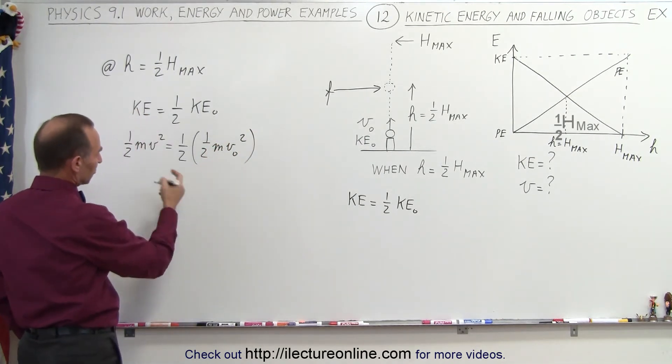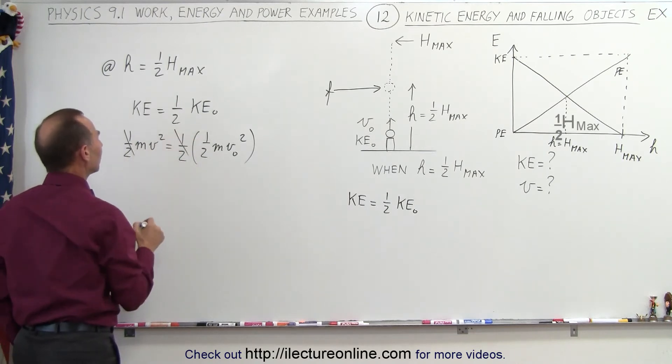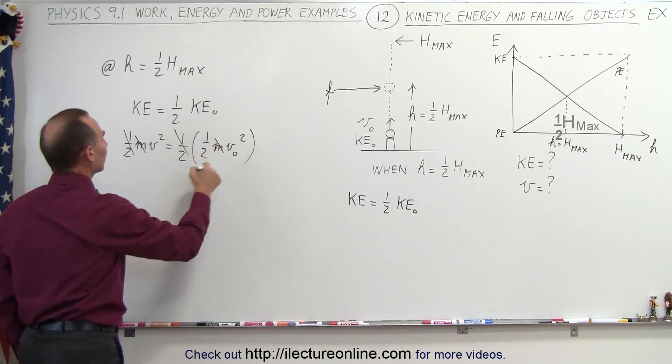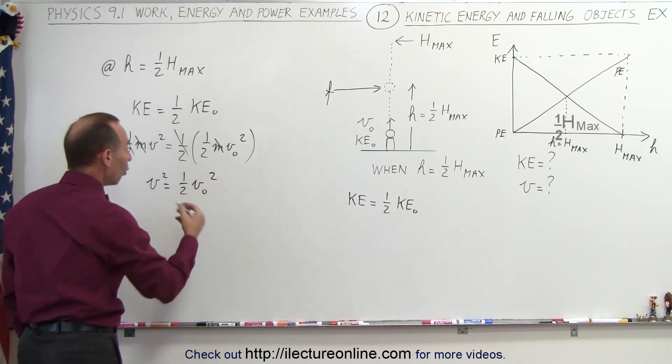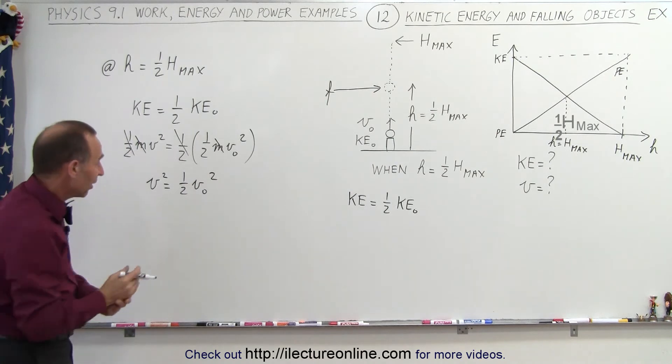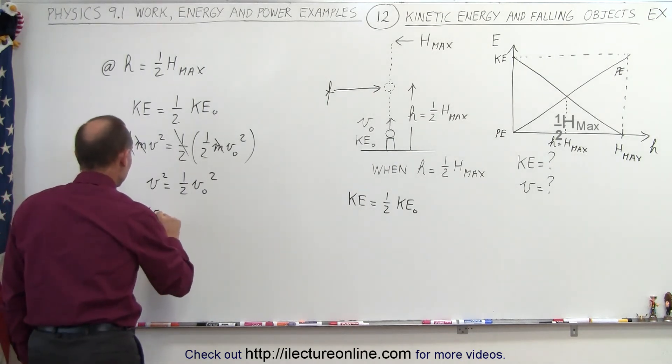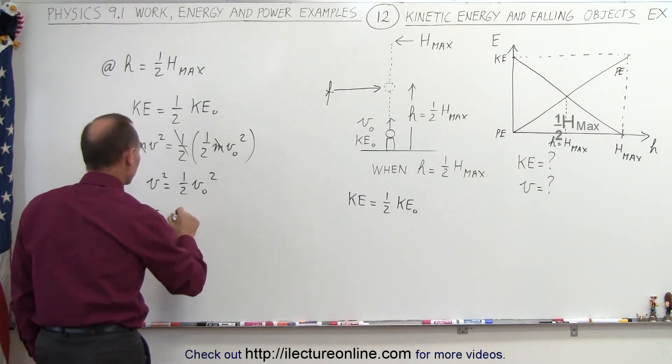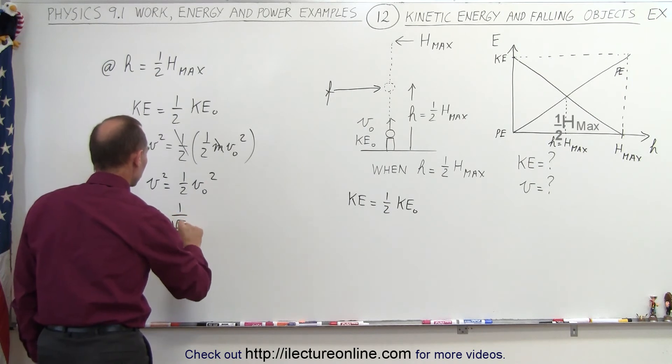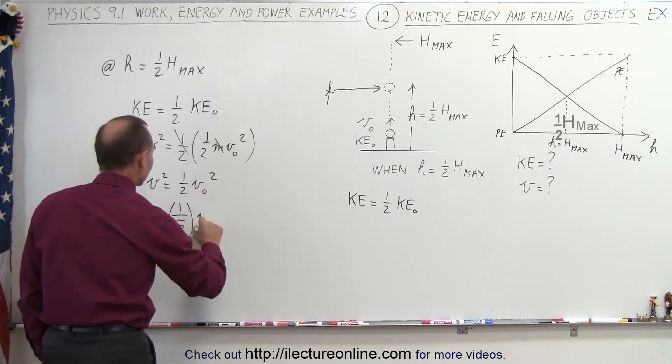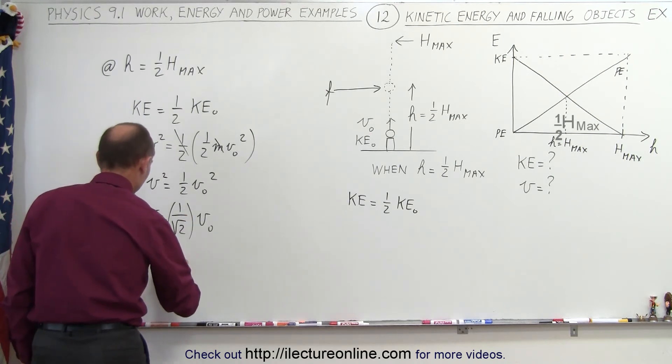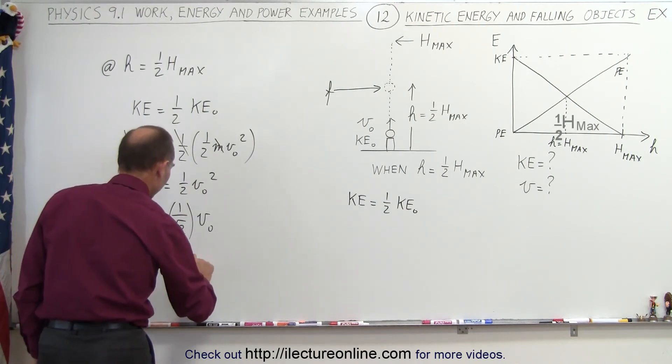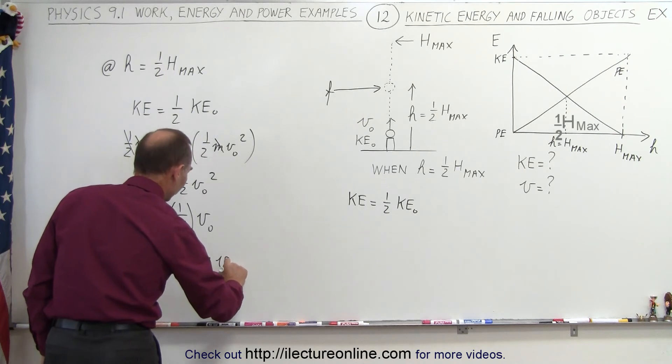So you can see here that we can cancel one-half on both sides, we can cancel an M on both sides, and that means that V squared is equal to one-half V initial squared, or if we take the square root of both sides, we then have V is equal to, well that would be one over the square root of two times V initial, or if we calculate that, this would be V is equal to 0.707 times V initial.